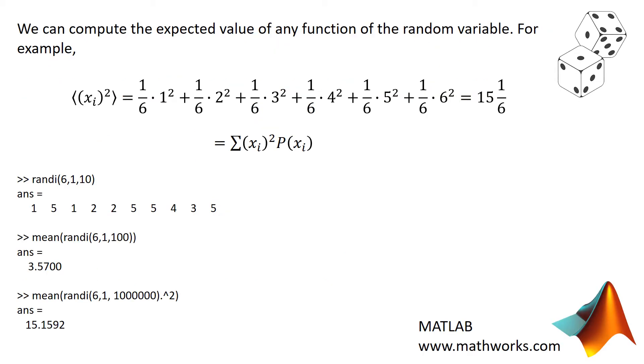Using the same kind of mathematical operation, we can take the expected value of any function of a random variable. So for example, the expected value of x squared. Or we could say, the mean of x squared, or the expectation of x squared, all mean the same thing. So the expected value of x squared is the sum over each possible value of x squared times its probability. That's what I have written out here. If you do the calculation, you get 15 and 1 sixth.